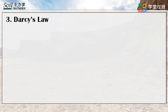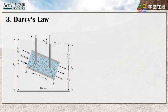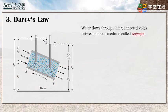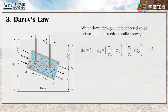The figure shows the relationship among the pressure head, elevation head, and total head for the flow of water through soil. Open standpipe piezometers are installed at points A and B. The pressure head at a given point is the height of the vertical column of water in the piezometer installed at that point. The loss of head between two points A and B can be given by equation 1.